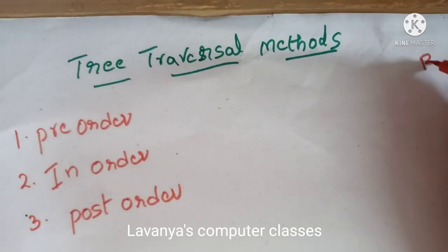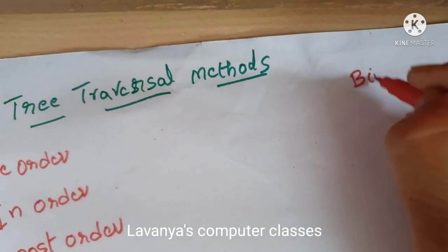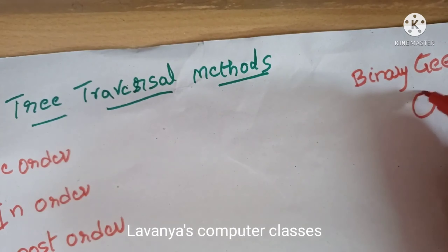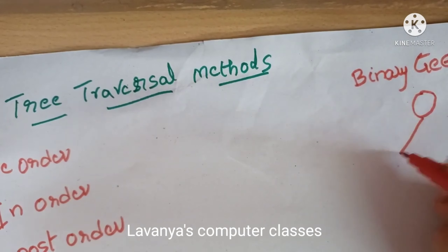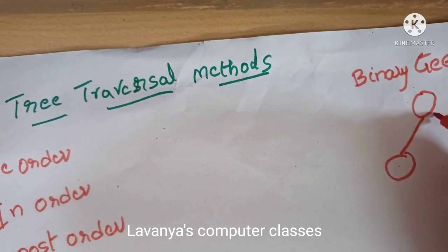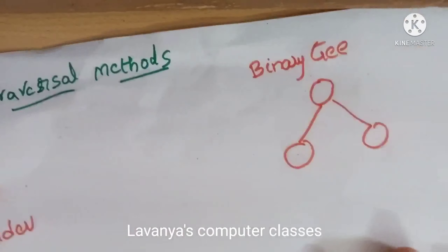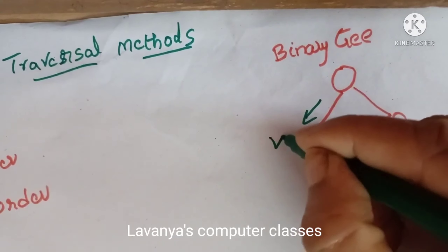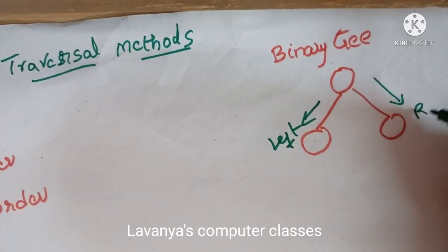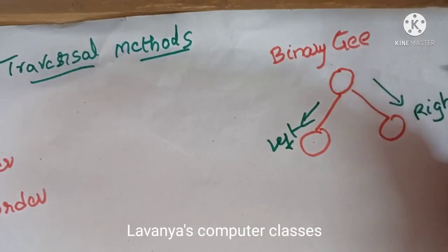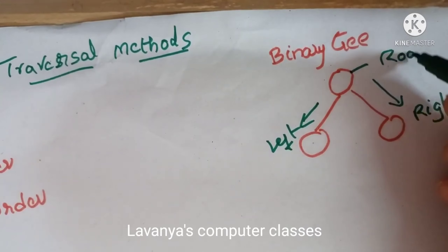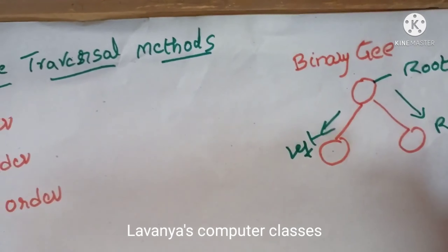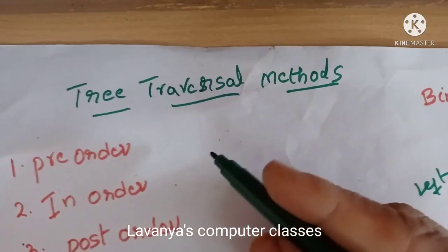These tree traversal methods are applicable for binary trees. In a binary tree, every root node has one left child and one right child. So binary tree means we have three vertices: root, left, and right.